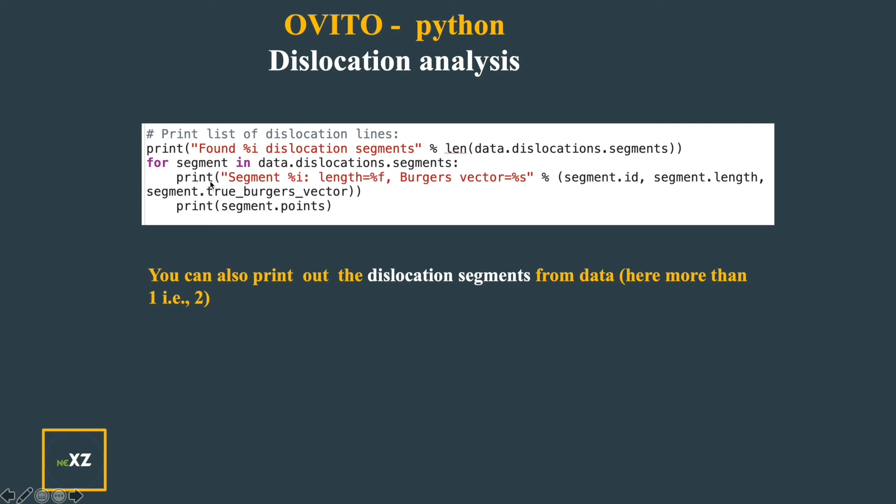which is dislocation ID, dislocation length and true Burgers vector. And later I print out these segment points as well. So this is a very clear way of getting the information and I will run the Python script.